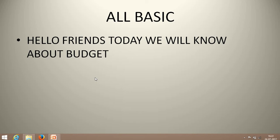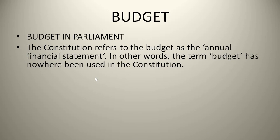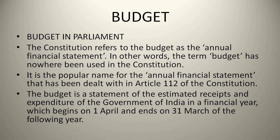Hello friends, welcome to All Basic. Today we will know about Budget in Parliament. The Constitution refers to the Budget as the Annual Financial Statement. The term Budget has nowhere been used in the Constitution. It is the popular name for the Annual Financial Statement dealt with in Article 112 of the Constitution. The Budget is a statement of the estimated receipt and expenditure of the Government of India in a financial year, which begins on 1st April and ends on 31st March of the following year.